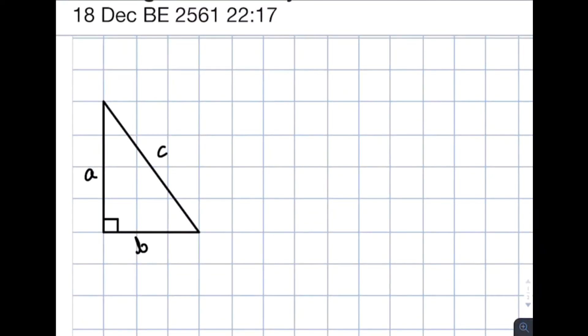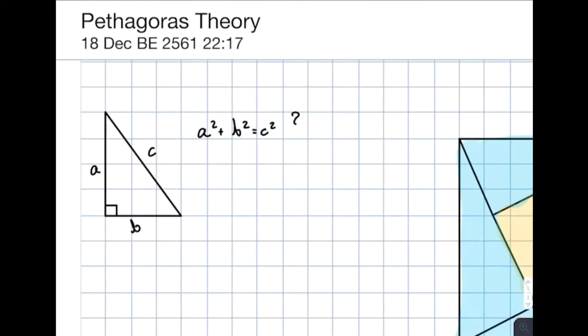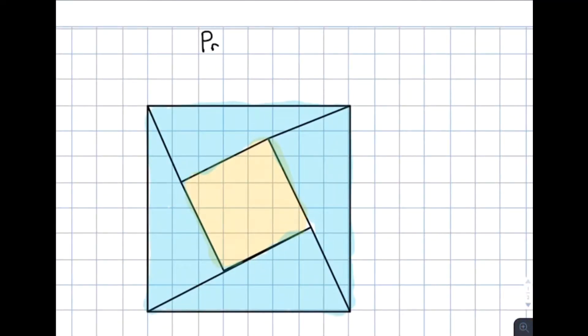Today, we are going to prove that a power 2 plus b power 2 is equal to c power 2 in Pythagoras theory. Let's get started.